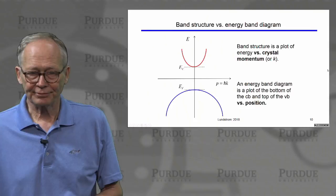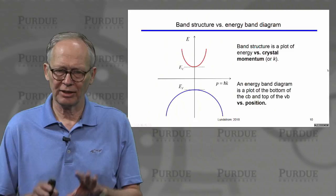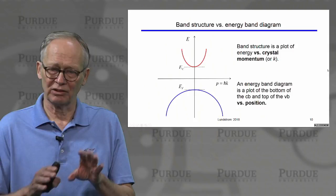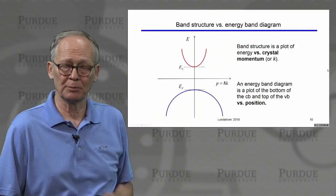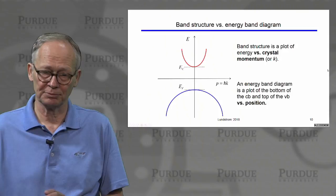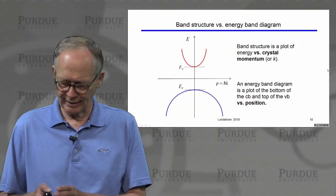Band structure is energy versus momentum, or energy versus crystal momentum k — where k equals 2 pi over wavelength. An energy band diagram, which we drew earlier, is simply the bottom of the conduction band versus position and the top of the valence band versus position. As the course progresses, energy band diagrams will become more and more useful to us.